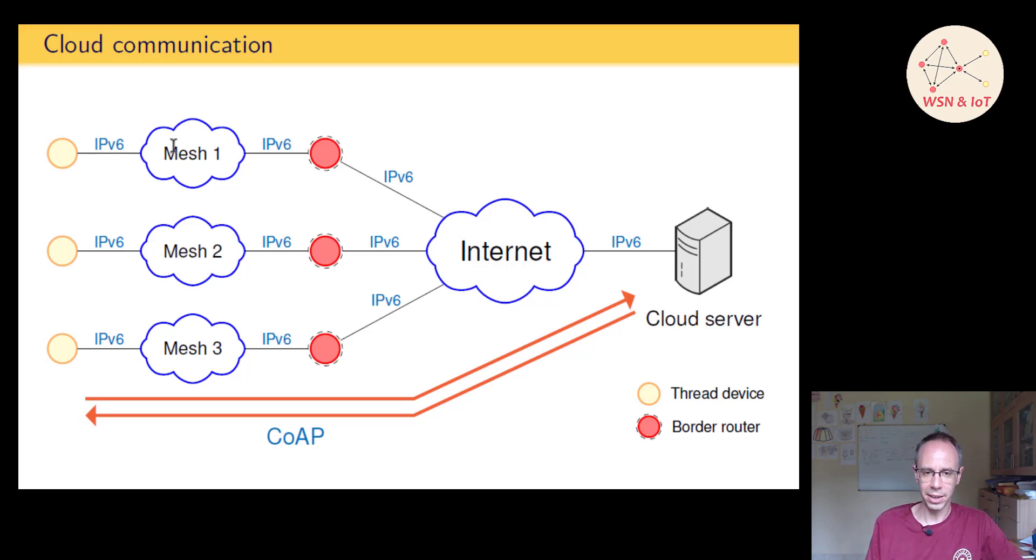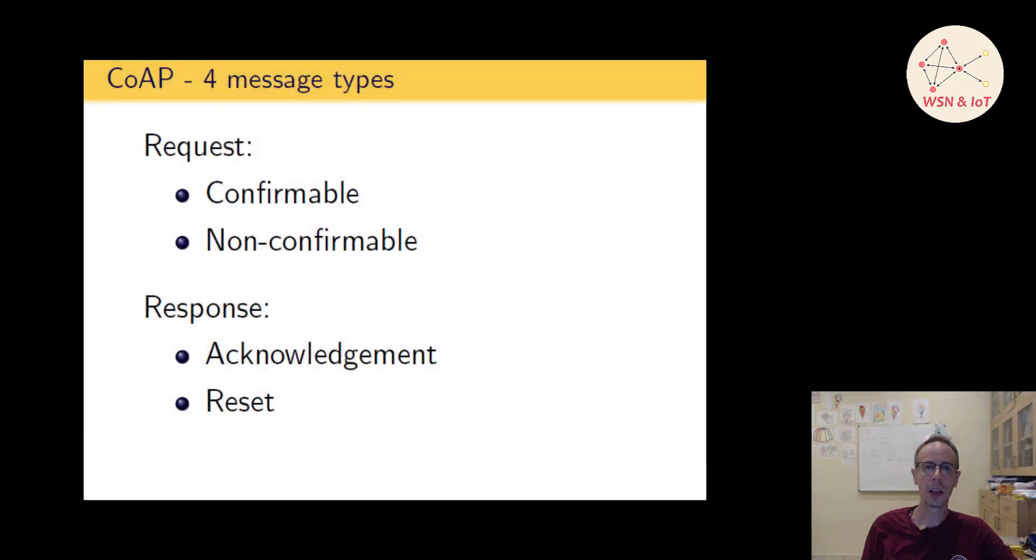In CoAP we have four different message types: two for a request and two for a response. A request can either be confirmable or non-confirmable. When we're sending a confirmable request, we're expecting from the server the server acknowledgement as response. If we're asking for a wrong resource which is not available, the server answer is a reset.